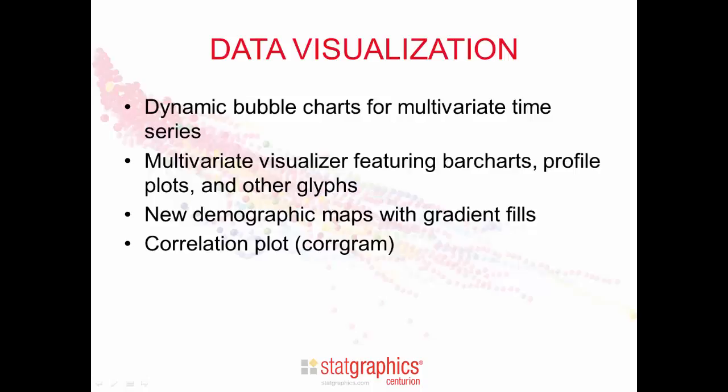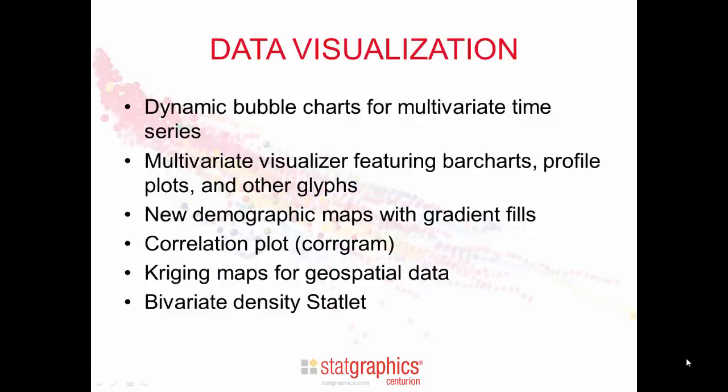A correlation plot, also called a correlogram, which uses colors to display the values of a correlation matrix, geospatial data maps based on Kriging, and a bivariate density statlet that displays the joint density of two variables.